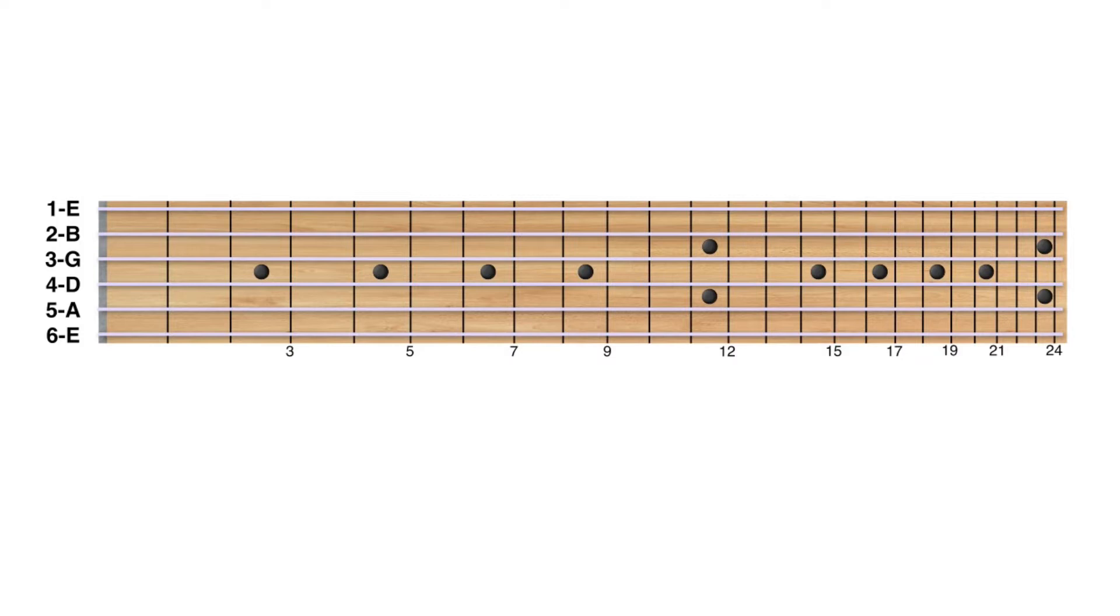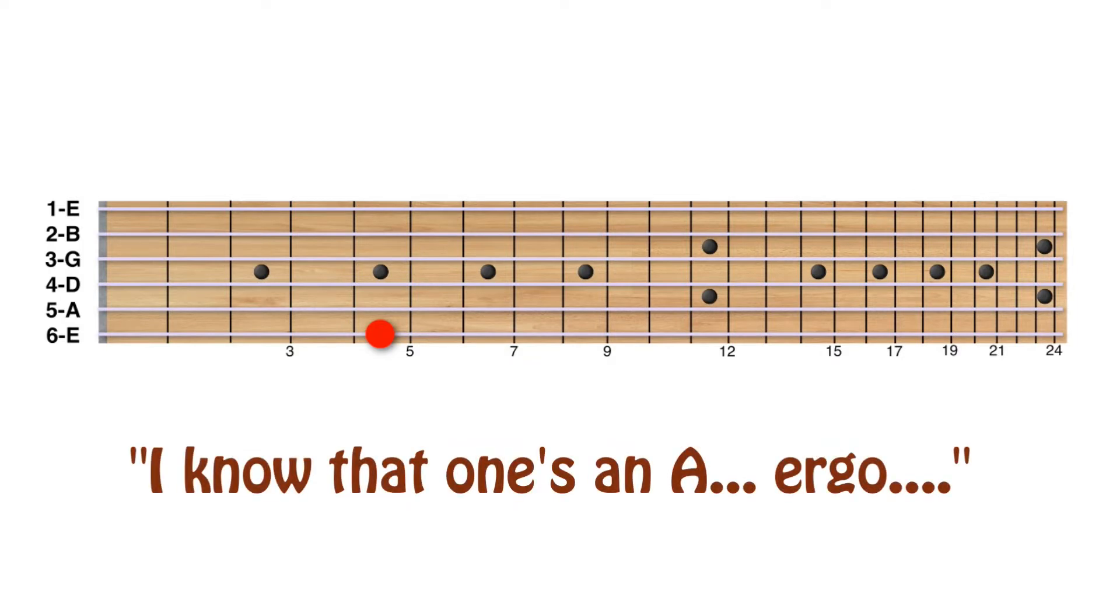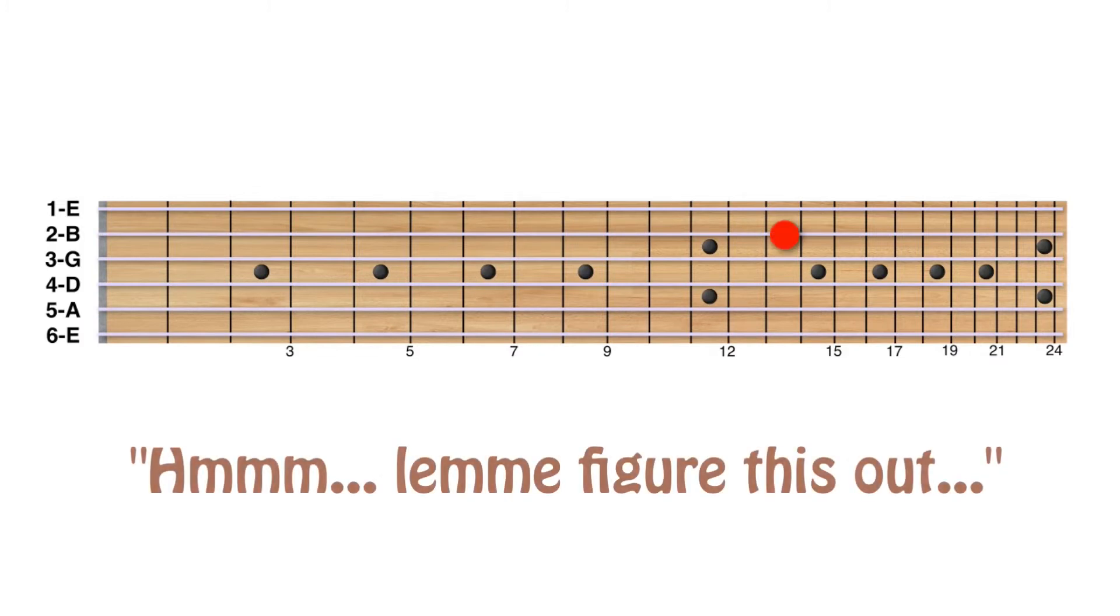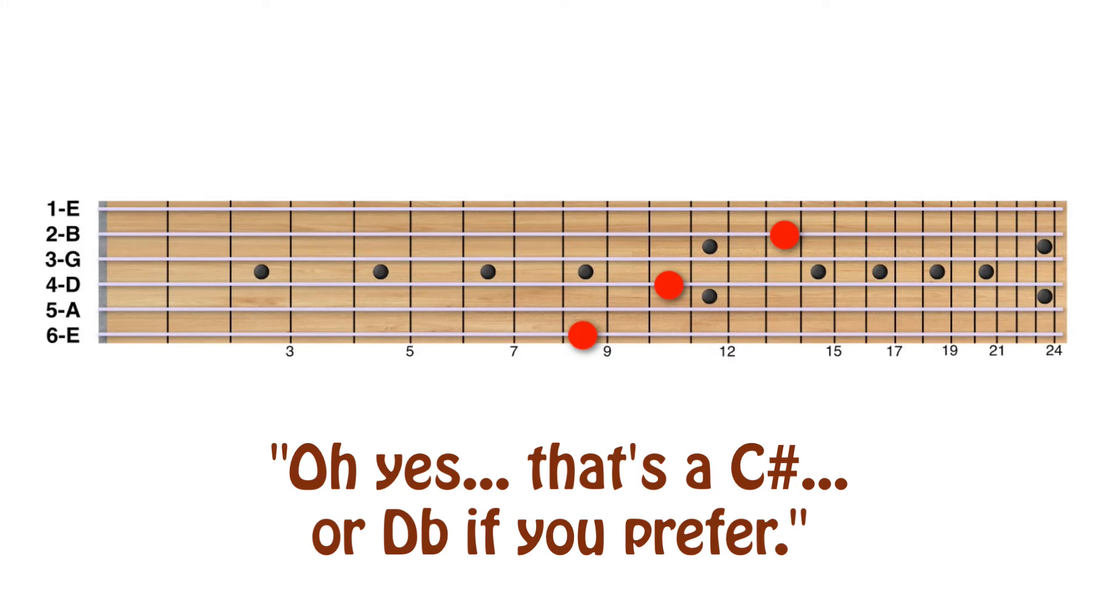You can take any bass note you know by name on the fifth or sixth strings and quickly extrapolate every note of that name anywhere on the neck. Conversely, you can be playing some unknown note up high in the string somewhere and quickly trace it back down to one of the bass notes you've memorized on the bottom two strings, thus establishing its identity.